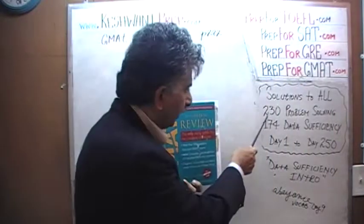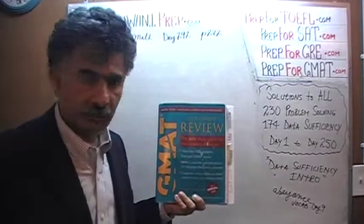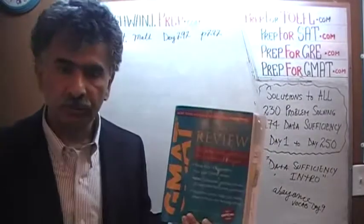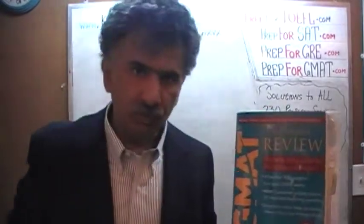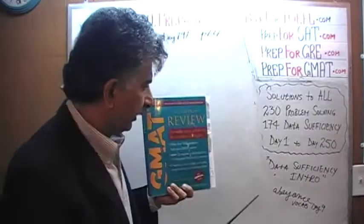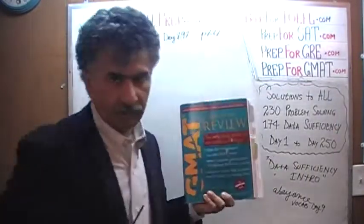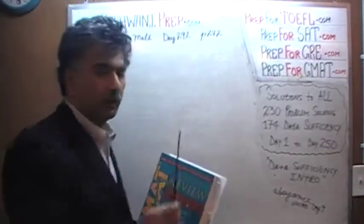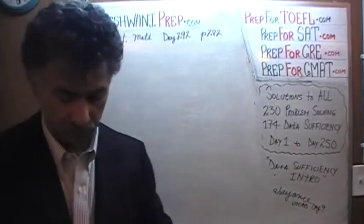The book contains 230 problem-solving questions and 174 data sufficiency questions. We have already solved every single math problem from this book. If you are interested in watching any of the original solutions, you will find them from day number 1 to 250. Right now we are in the middle of redoing the problems and we are on page number 282. Please turn to it.